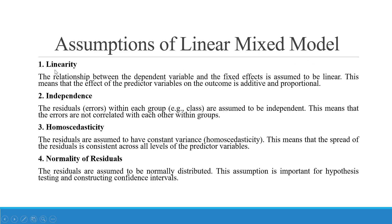The assumptions of linear mixed models are as follows. First, linearity: the relationship between the dependent variable and the fixed effects is assumed to be linear, meaning the effect of the predictor variable on the outcome is additive and proportional. Second, independence: the residuals within each group are assumed to be independent — errors are not correlated with each other within groups. Third, homoscedasticity: the residuals are assumed to have a constant variance, meaning the spread of residuals is consistent across all levels of the predictor variables. Fourth, normality of the residuals: the residuals are assumed to be normally distributed, which is important for hypothesis testing and constructing confidence intervals.